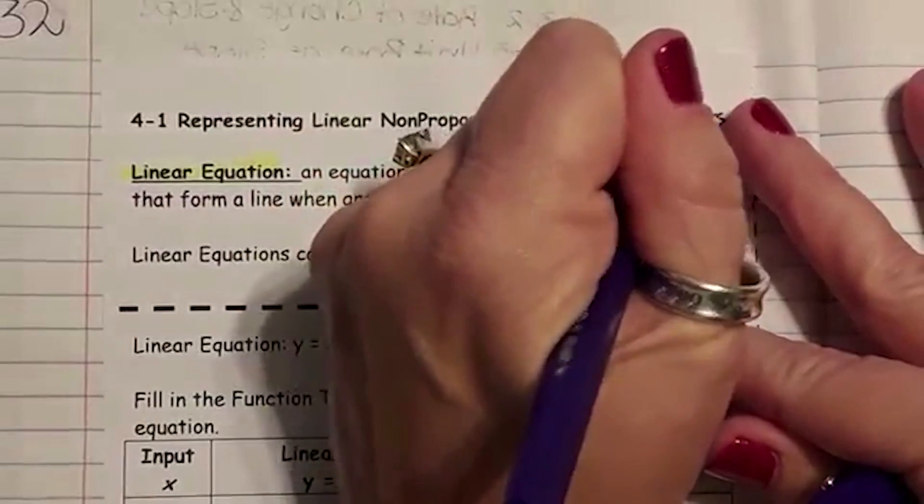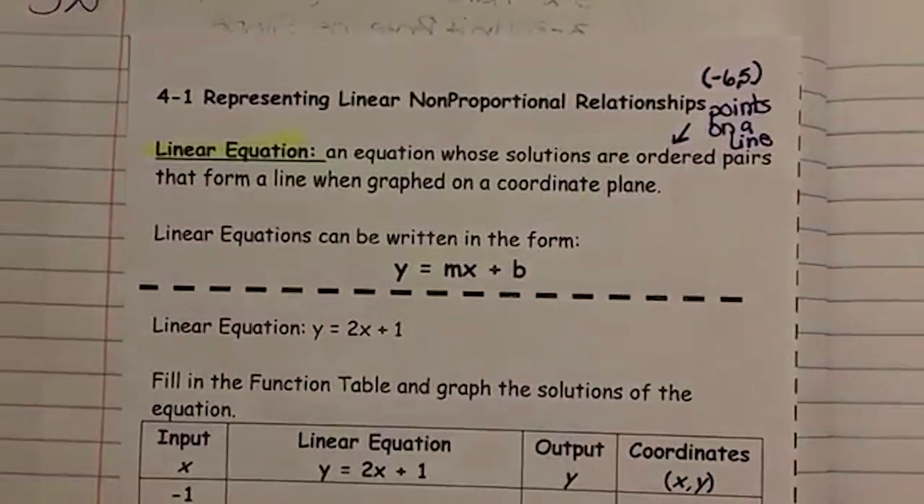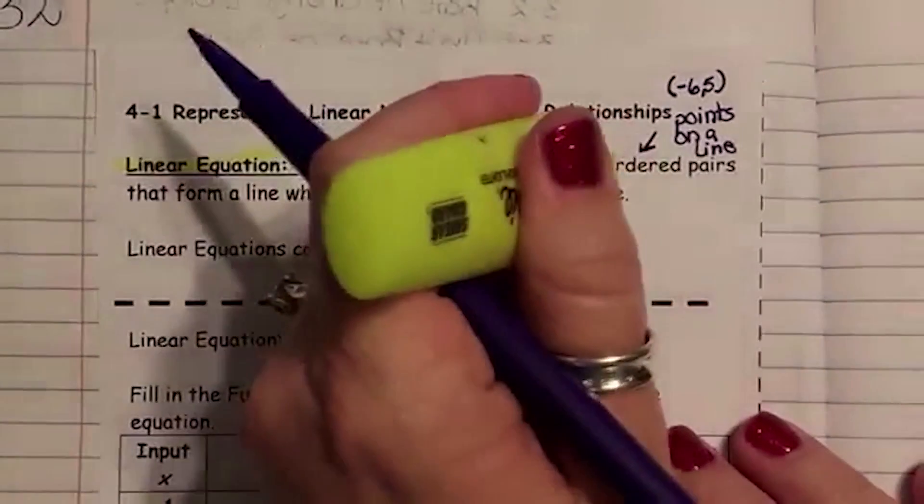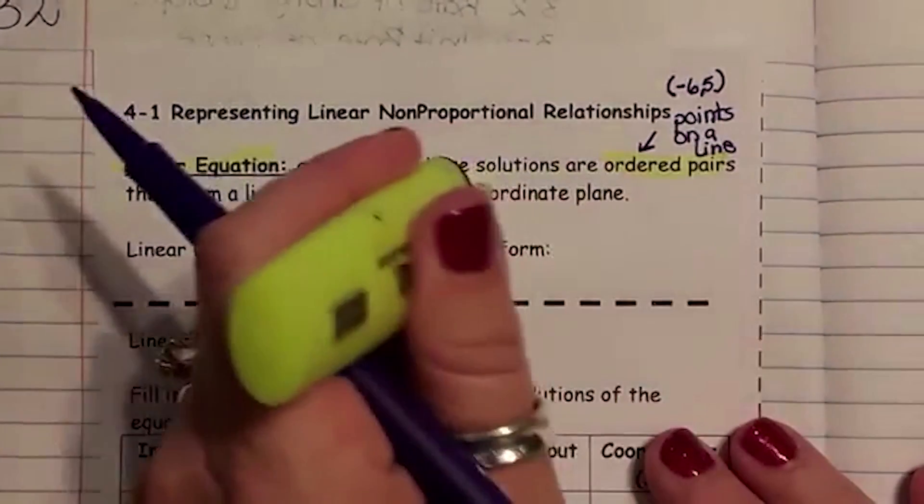Okay, and they can look like negative 6, 5. This is an ordered pair. And that form a line when graphed on a coordinate plane.